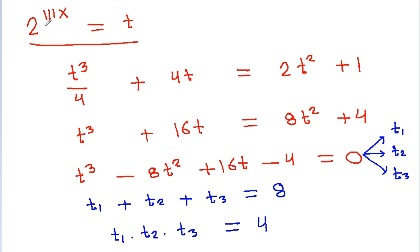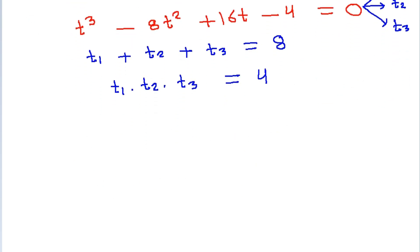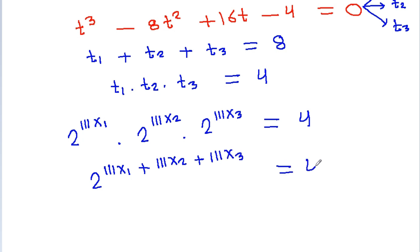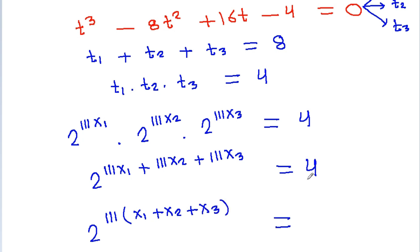And since t = 2 power 111x, we have t1 = 2 power 111·x1, t2 = 2 power 111·x2, and t3 = 2 power 111·x3. Therefore t1 times t2 times t3 = 2 power 111(x1 + x2 + x3) is equal to 4, which is 2 squared. So 111(x1 + x2 + x3) = 2.